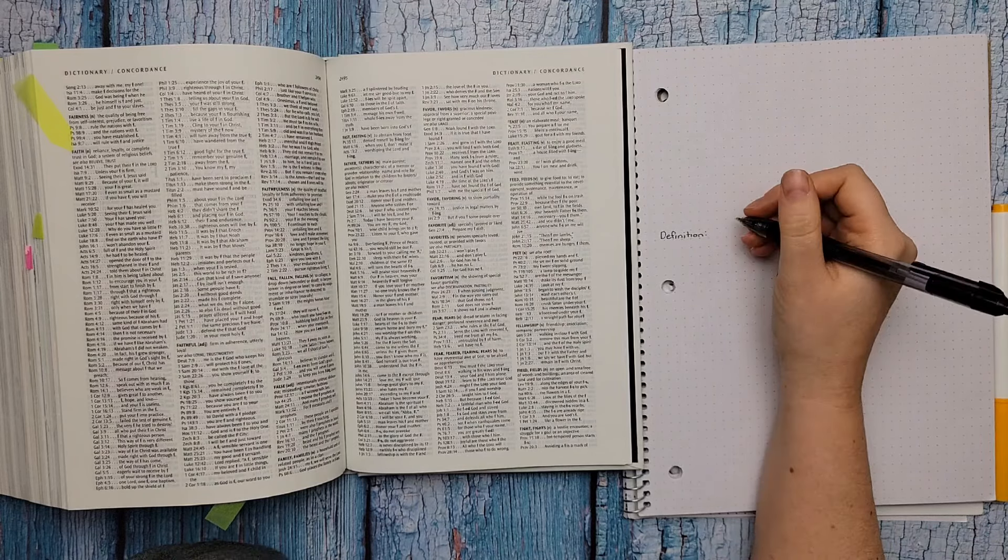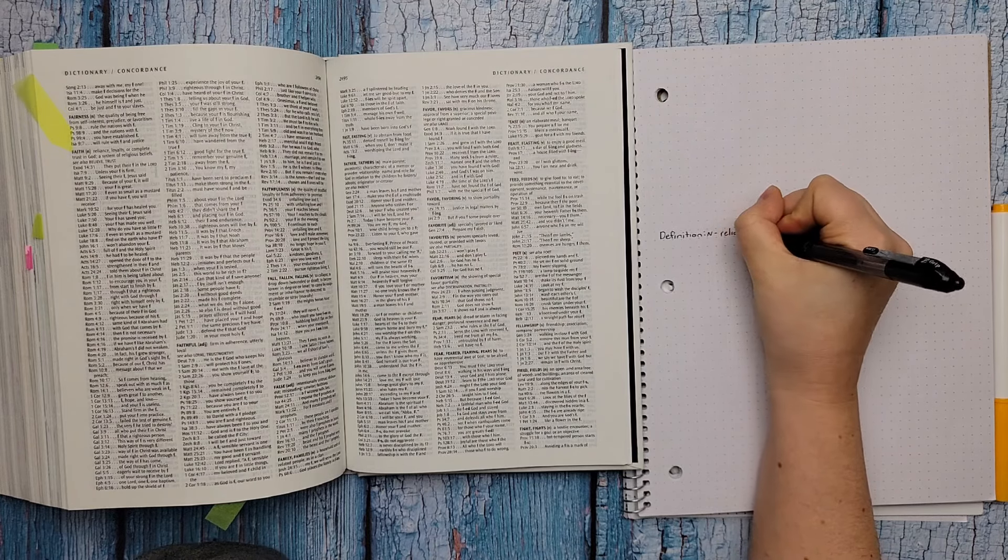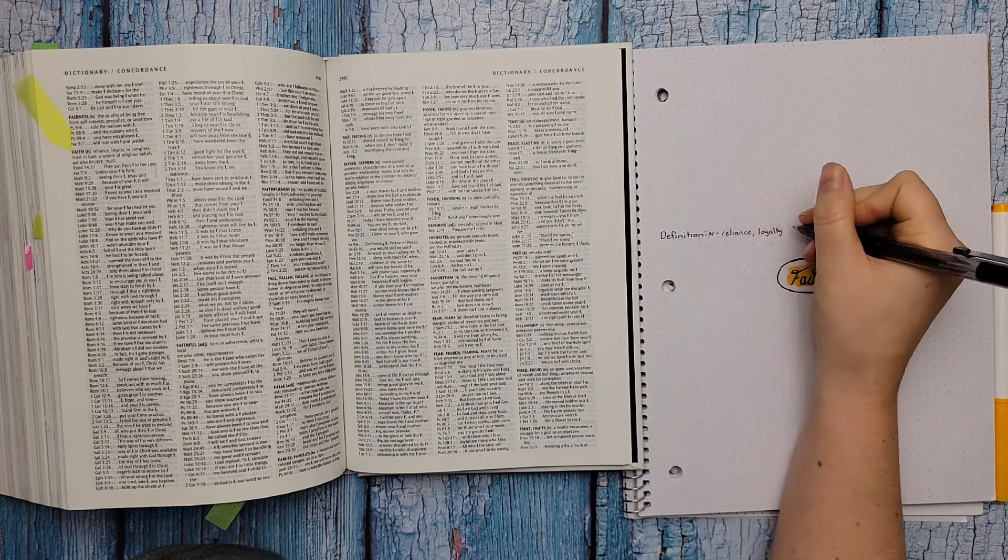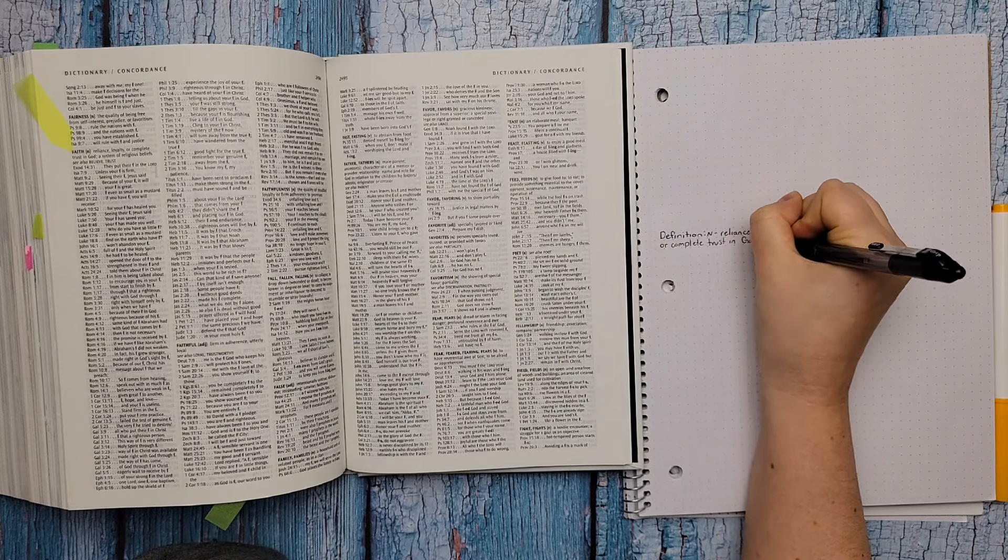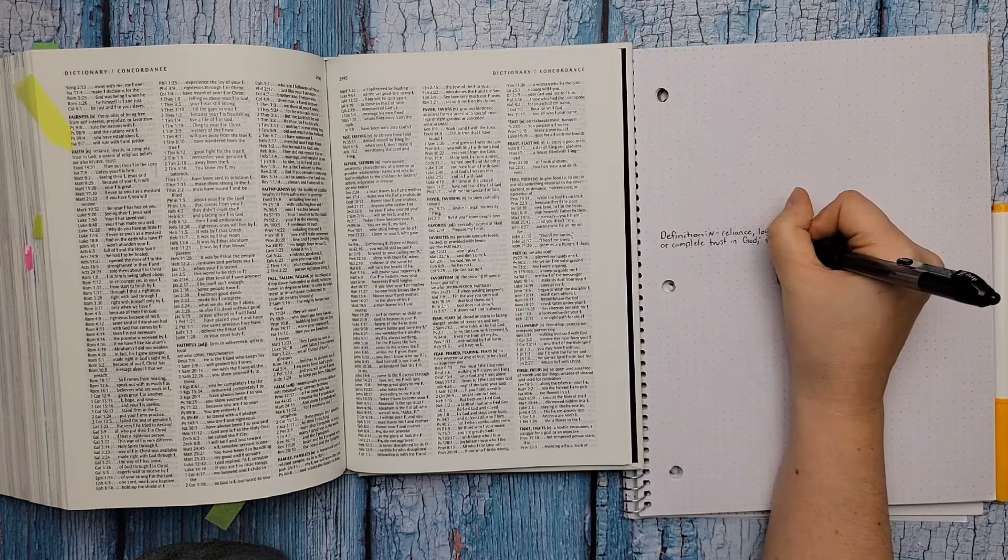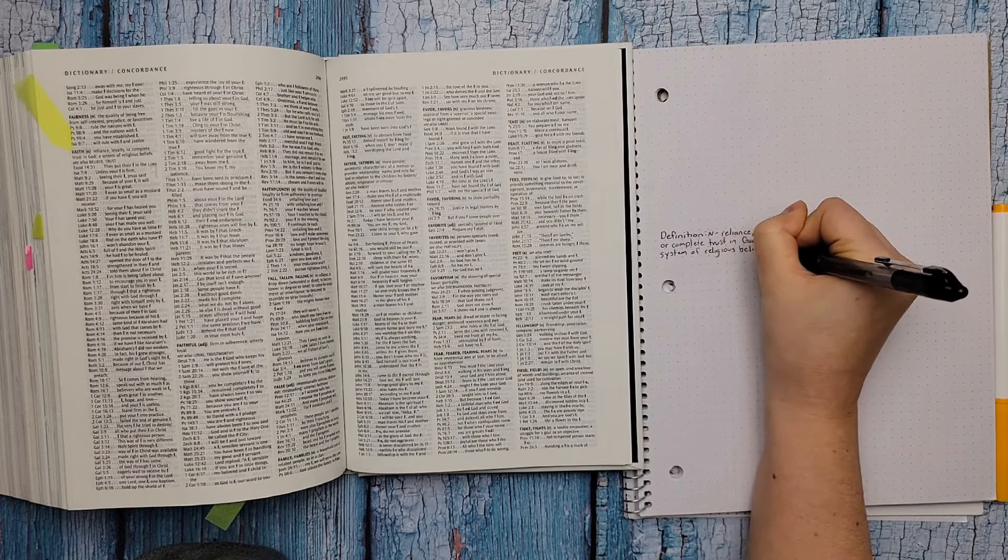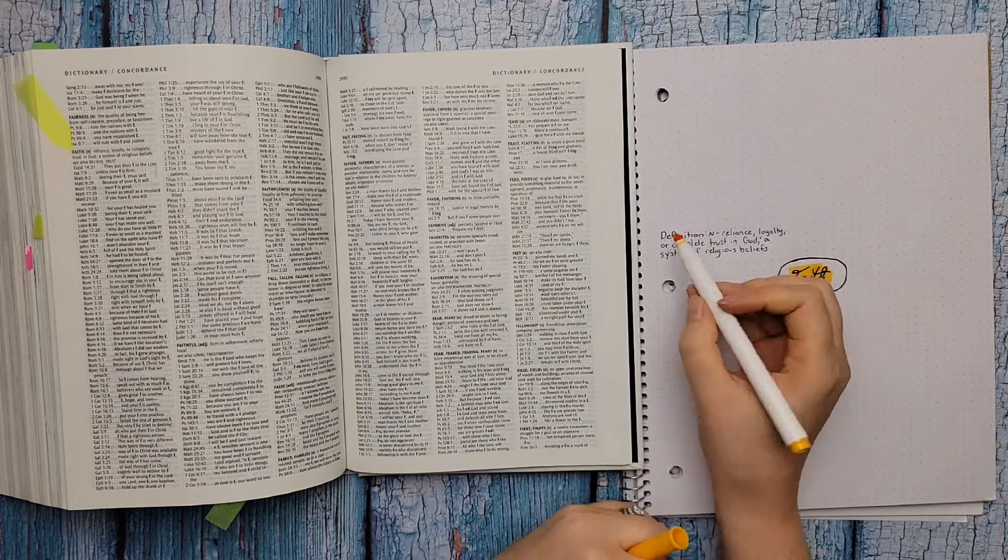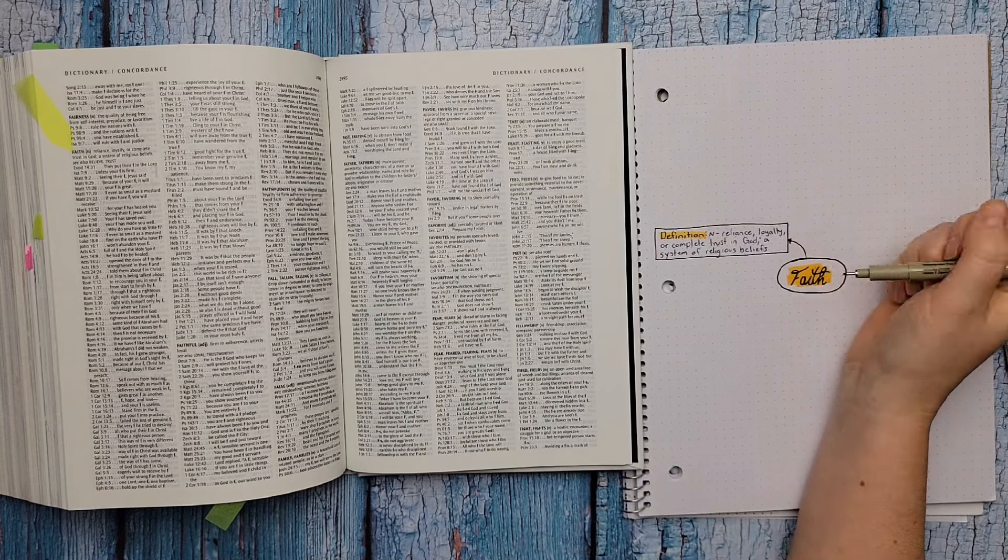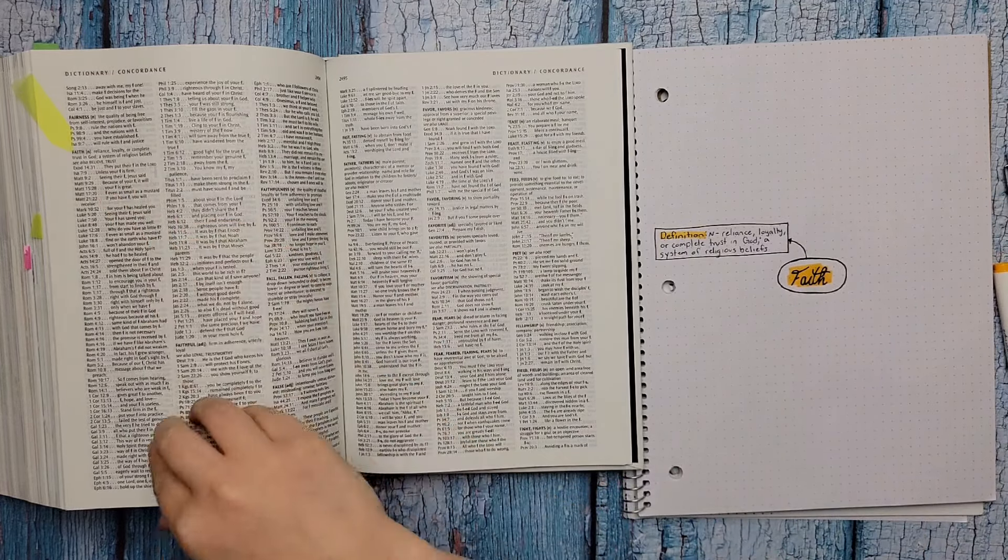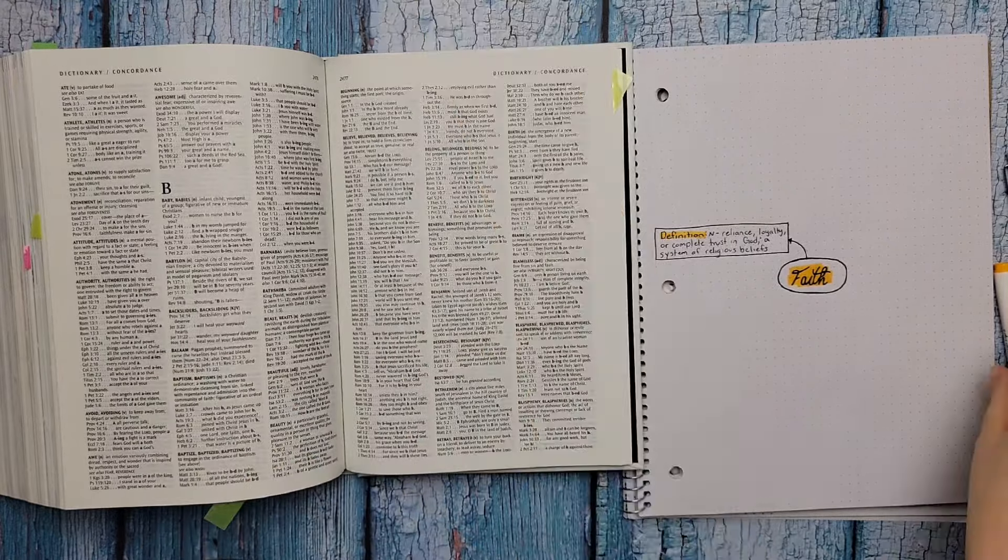I'm also going to use this darker yellow color. I really love this color. All right so the definition. This is a noun and they have the definition as reliance, loyalty, or complete trust in God. And then the second definition is a system of religious beliefs. So we're really focusing on the first one: reliance, loyalty, or complete trust in God. And also within this they say also see trust and see believe. They are connecting those two words believe and trust to this word faith. So because of that we are going to go ahead and look up those definitions as well and add them to our page.